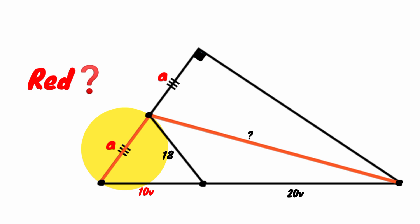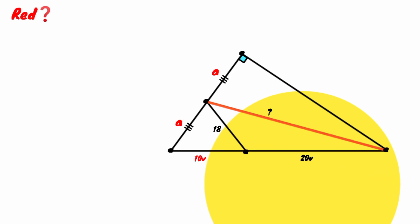Their lengths are A each. This line segment is given to be 10V and this is 20V. So how can we calculate the length of this red line segment? It is very simple.